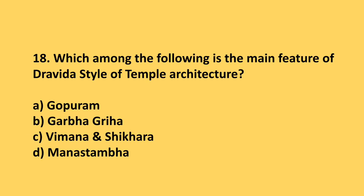Question 18: Which among the following is the main feature of the Dravida style of temple architecture? The answer is option C: Vimana and Shikhara.